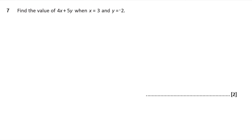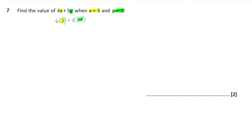Question 7. Find the value of 4x plus 5y when x is 3 and y is negative 2. This is a substitution question. We replace x and y in the expression. So 4x becomes 4 lots of 3, and 5y becomes 5 lots of negative 2. Four times three is 12, and five times negative two is minus 10. Then 12 take away 10 is 2.